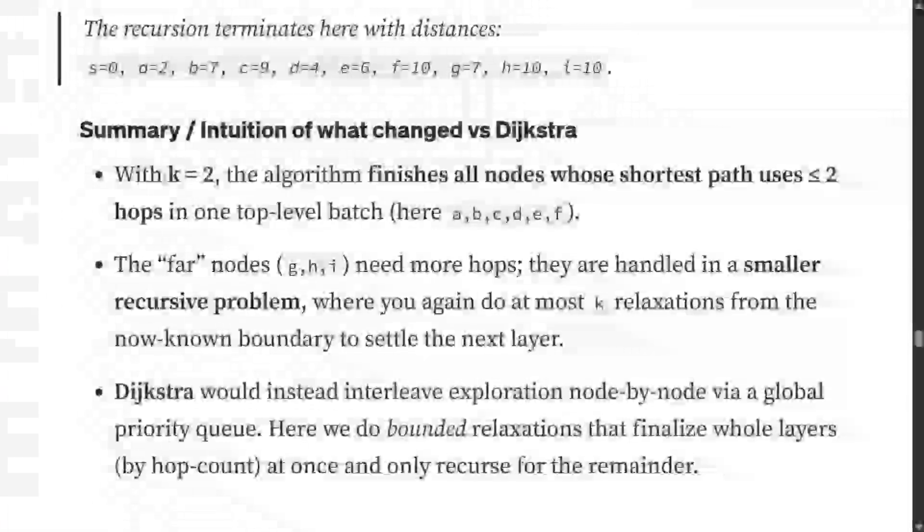Here's the intuition: with K equals 2, the algorithm finishes all nodes whose shortest path uses less than 2 hops. The far nodes that need more hops are handled in a smaller recursive problem. Instead of calculating everything starting from S, we identified a subset called pivots. D, E, and F, the second round of frontiers, were our pivot nodes helping us reach the more distant nodes. Dijkstra would interleave exploration node by node via global priority queue. Here we do bounded relaxation that finalizes whole layers.